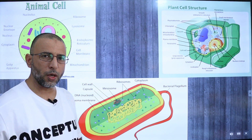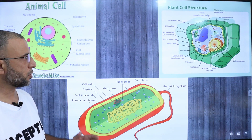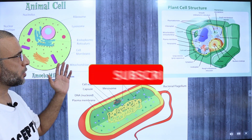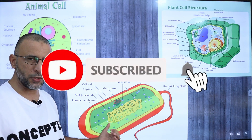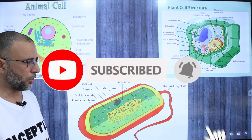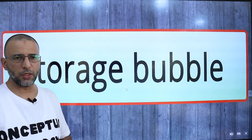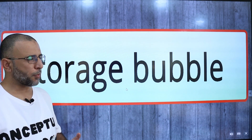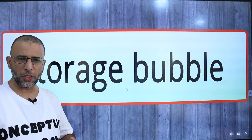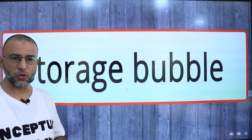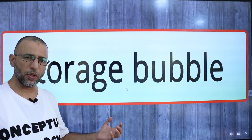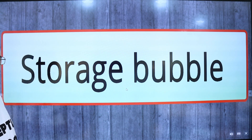Vacuoles are present in eukaryotes like animal cells and plant cells, and absent in prokaryotes. Vacuoles are storage bubbles found in cells. Vacuoles might store food and a variety of nutrients a cell might need to survive. They can even store waste products so the rest of the cell is protected from contamination.